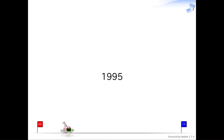Two years later, in 1995, I put it on the internet. That's how Ruby came to the world. Officially, Ruby's birthday is February 24th, 1993 — the day I named it Ruby. But I released it on the internet on December 21st, 1995, which is another definition of Ruby's birthday.